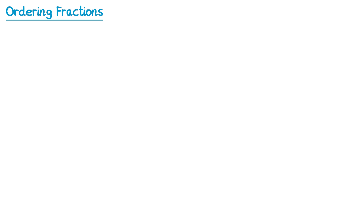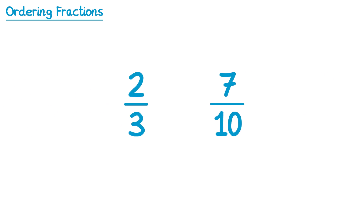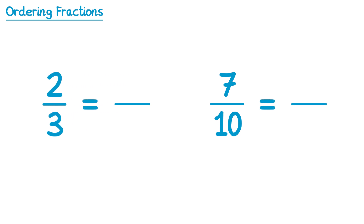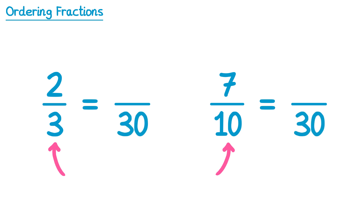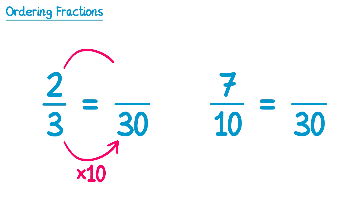Let's try this with another example. Let's compare the fractions 2 thirds and 7 tenths to try and work out which one's bigger. We'll rewrite them as different fractions with the same denominator. It needs to be a number that both 3 and 10 go into — a multiple of 3 and 10. The number 30 is in both the 3 times table and the 10 times table, so we can use 30 as our new denominator. We get from 3 to 30 by multiplying by 10, so we multiply the 2 on top by 10 as well, giving us 20. So 2 thirds is the same as 20 thirtieths.